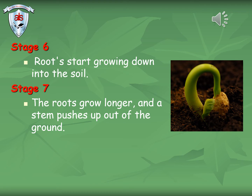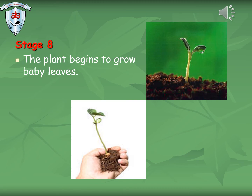After the stem has shot up, we can see the roots will start growing down into the soil. The roots will grow longer and longer and the stem pushes up out of the ground. Can you see in the picture? The stem is becoming long and strong. At this stage, we can see that the plant will begin to grow baby leaves. The stem will start to grow tiny baby leaves. Day by day, when you keep watering the plant, the baby leaves turn into big leaves.